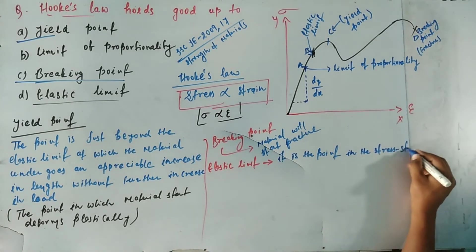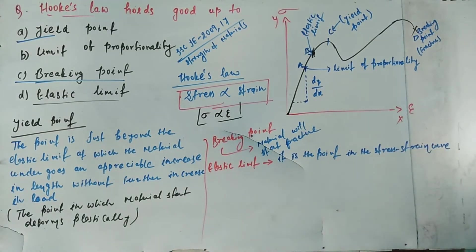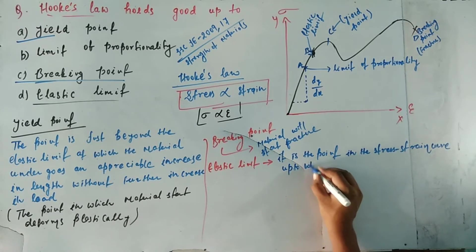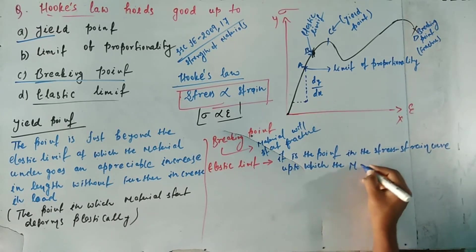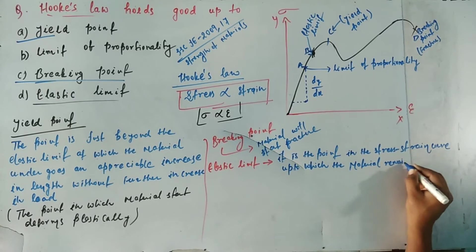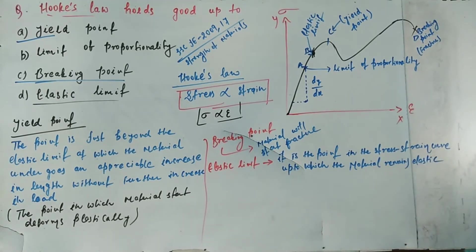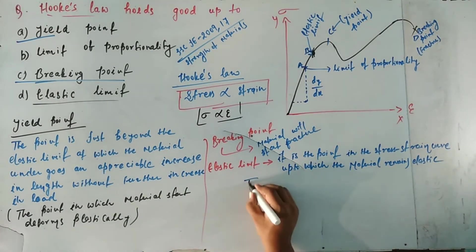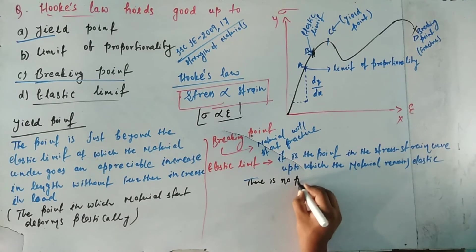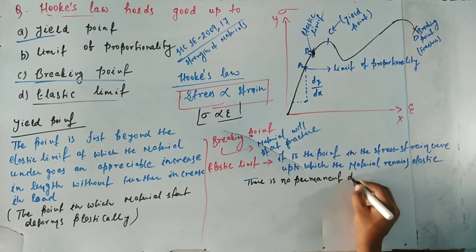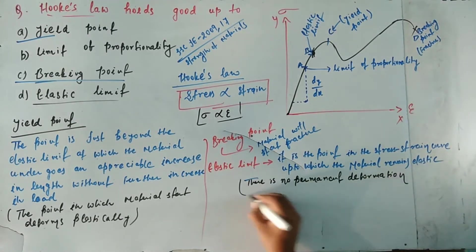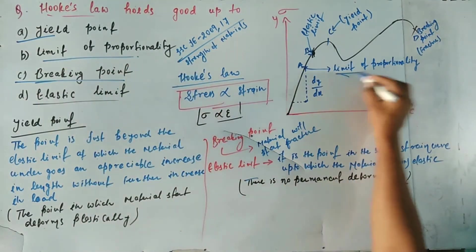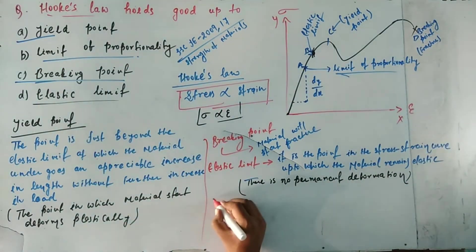Next is option D — elastic limit. The elastic limit is the point in the stress-strain curve up to which the material remains elastic. It is the point up to which the material can regain its shape and size when the external force or load is removed, meaning there is no permanent deformation in the material.